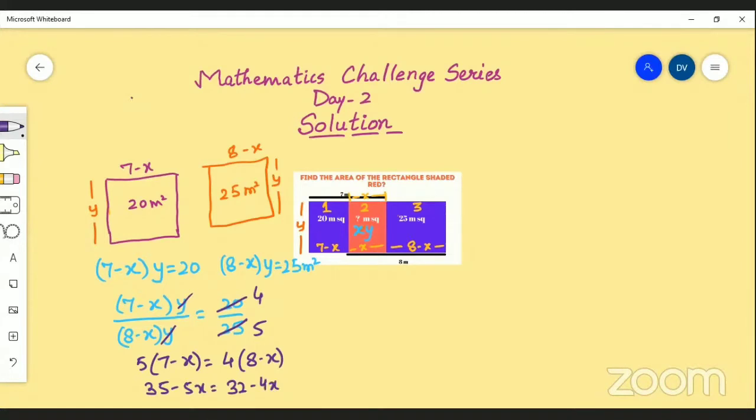So from here if you will solve, minus 5x plus 4x equals 32 minus 35. So here minus x you will get minus 3, so the value of x is 3 meters. So 7 minus x into y equals 20, so here when you put 3 you get 4y equals 20 and y equals 5 meters.